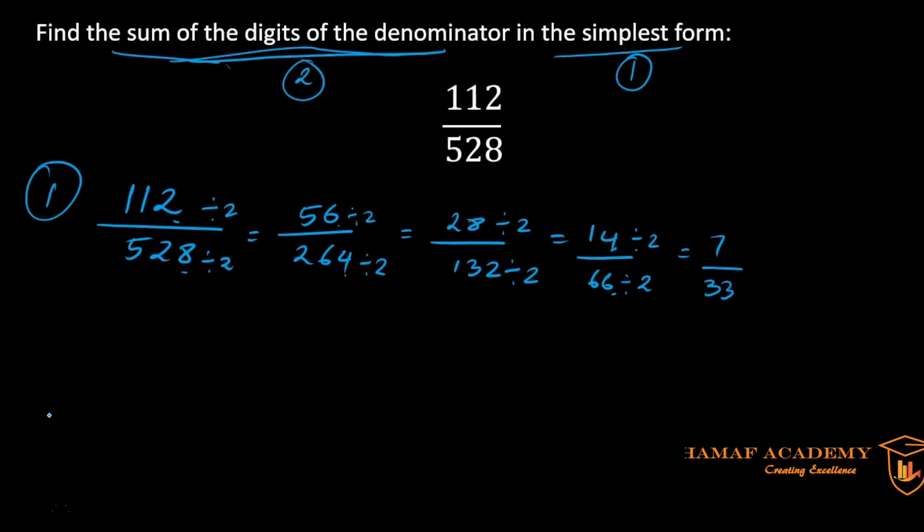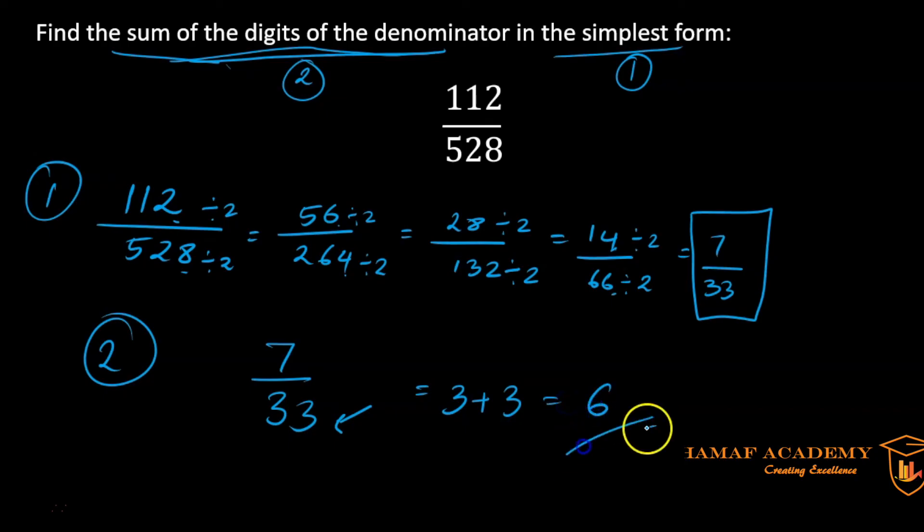And now we are moving on to our second step of the question, which is find the sum of the digits of the denominator. So we have already reached our simplest form, which is 7 by 33. And what does sum of the digits of the denominator mean? Our denominator is 33, so sum of the digits means we have to do 3 plus 3, which gives us 6. And that's our final answer.